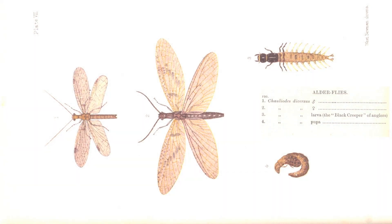These hatches of the adult mainly happen in spring and summer, but luckily for us the larval stage lives in the river all year round. It's considered to live for one to three years in the river, so it's very available to trout and other predators.